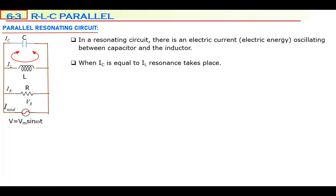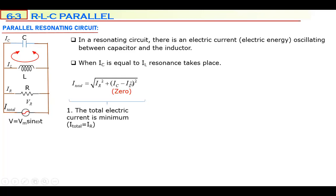If IC is equal to IL, that term becomes zero, so only IR remains. The square root of IR squared gives only IR. Total current becomes minimum because this term becomes zero — total current reaches its minimum value. In a parallel resonating circuit, total current is minimum. Why? Because IC and IL are equal, so that term is zero. Therefore I-total is minimum and equals only IR.